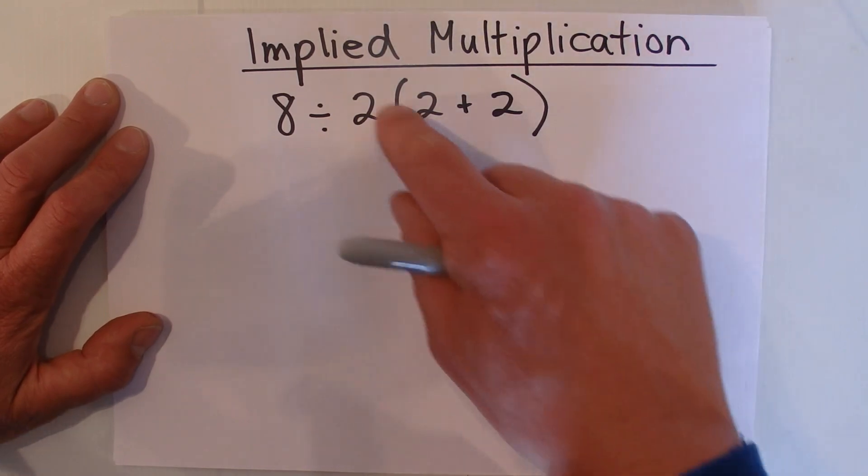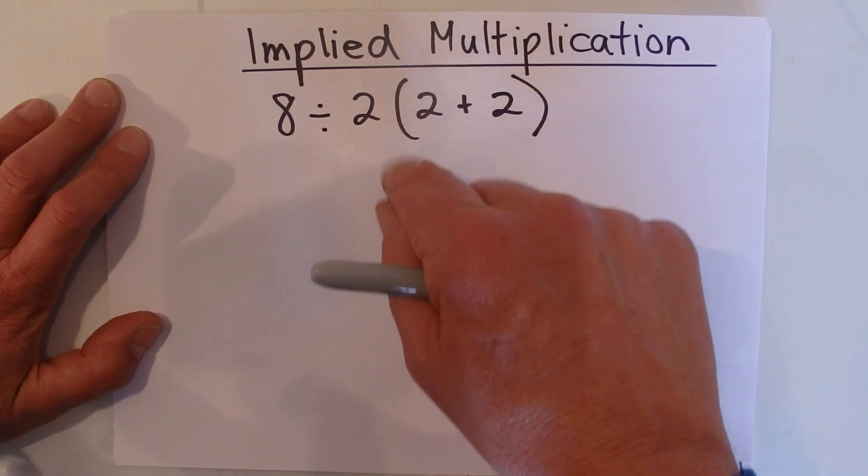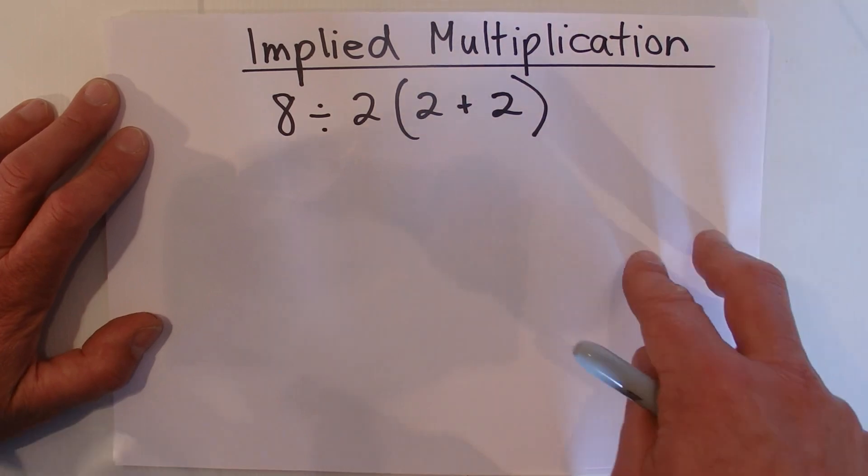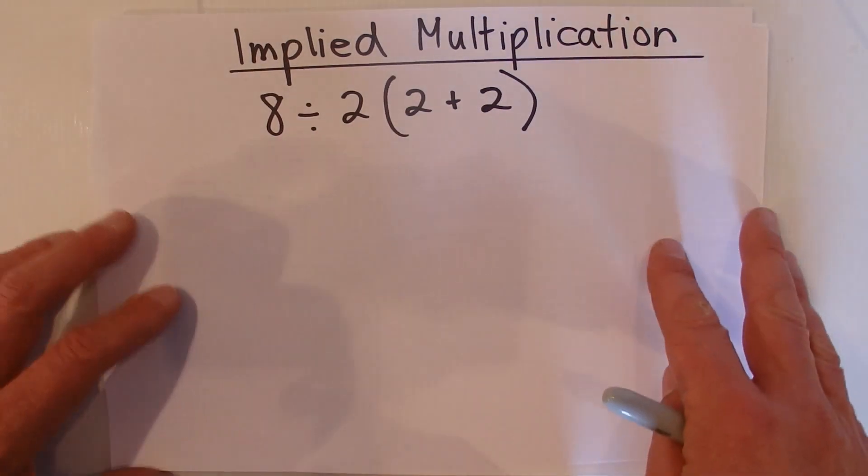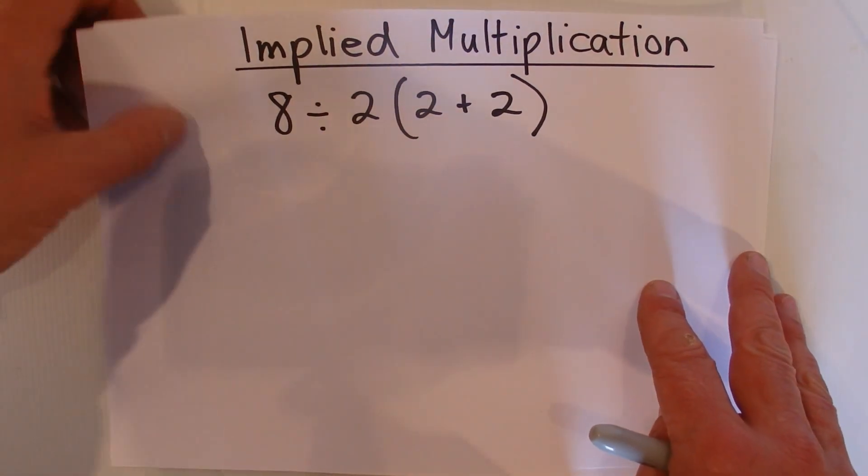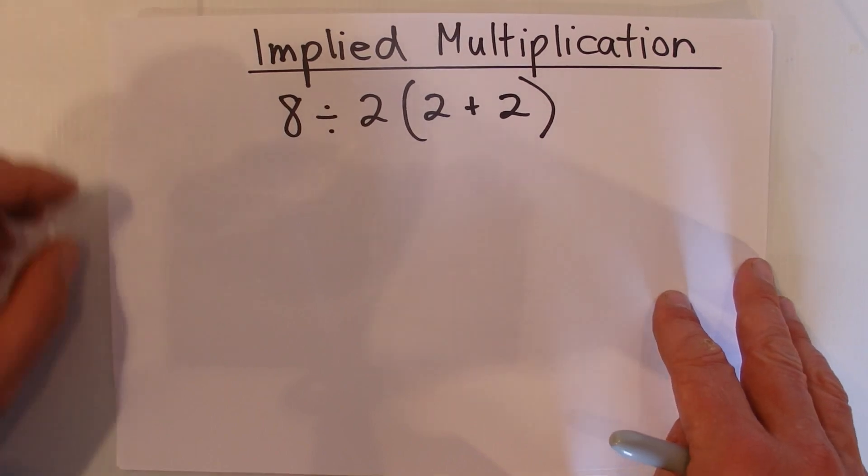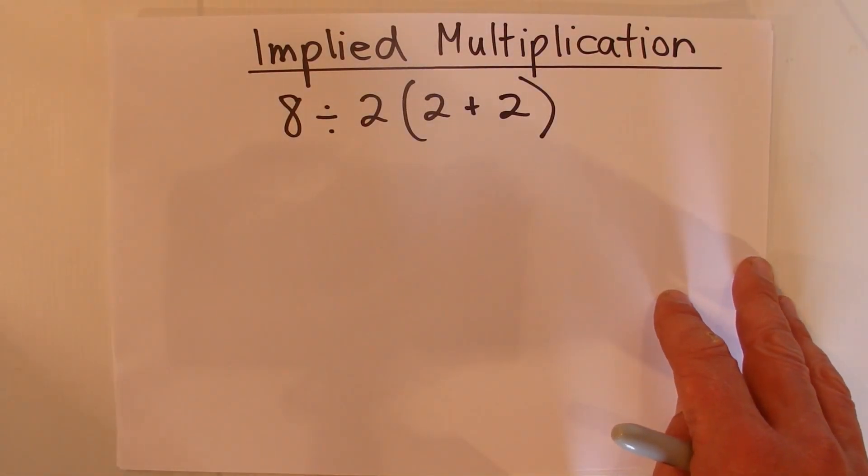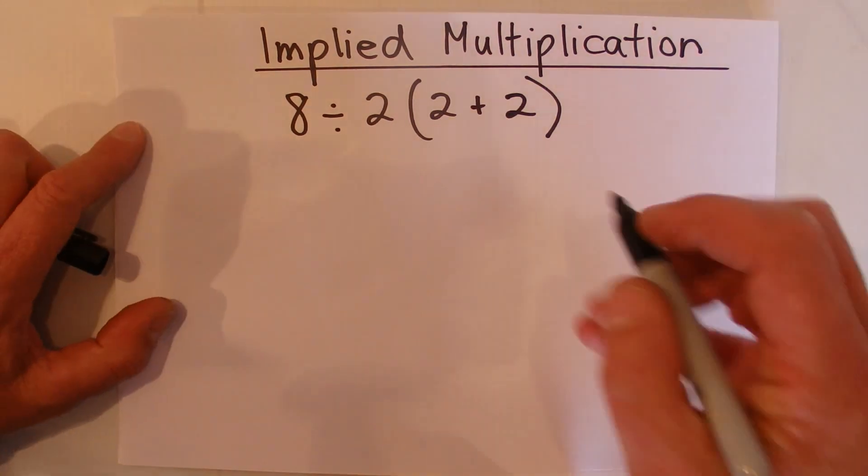where there's no multiplication sign, the 2 is just butting up next to the brackets. That's an example of Implied Multiplication, which takes a higher precedence than division. So how this works in this equation then: